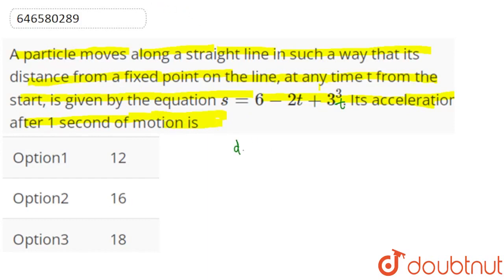To find the acceleration, we do double differentiation. First, ds/dt = 0 - 2 + 9t².